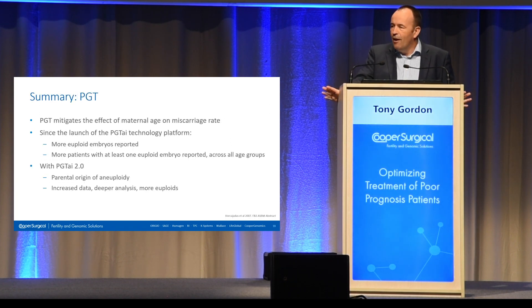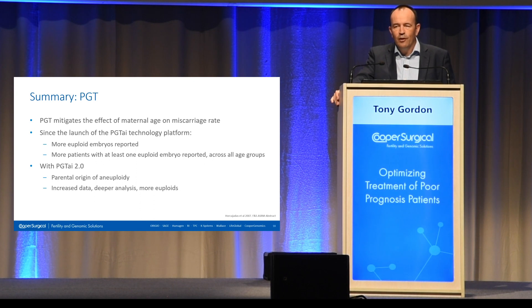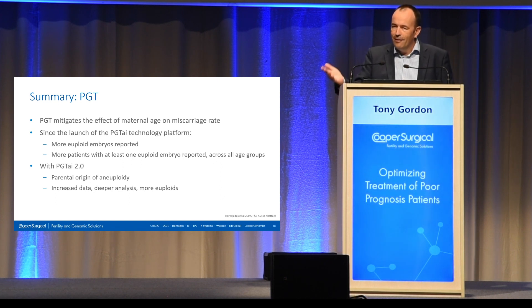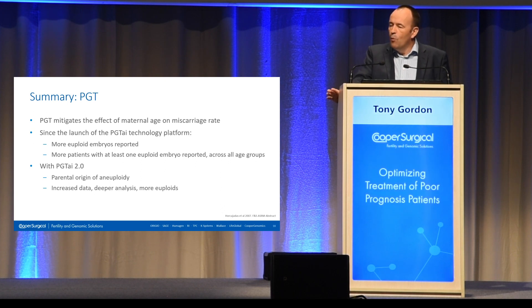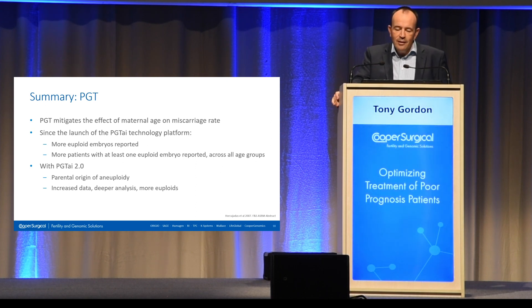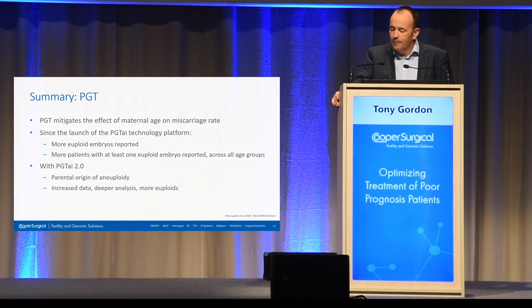In summary: in our PGT area, we can see superb data from huge numbers of cycles where PGT is mitigating the effect of maternal age on miscarriage rates if you can find a euploid — and I appreciate that gets harder with maternal age. Since we announced the first version of our PGT-AI, we've reported more euploids and more patients have had a transfer across all age groups. We're going to look for origins of aneuploidy with our new test and keep trying to improve outcomes with more data. Thank you.